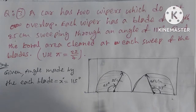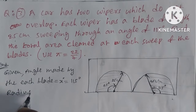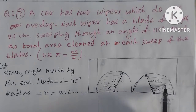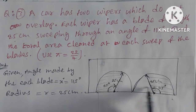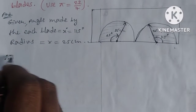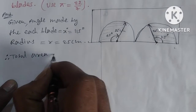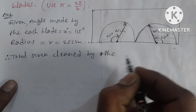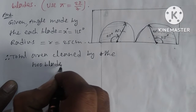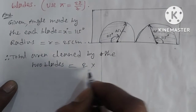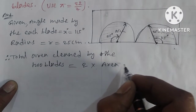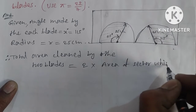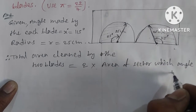The radius and the length of the blade: radius r is equal to 25 centimeters. Total area swept by the two blades through 115 degrees. Therefore, total area cleaned by the two blades equals 2 into the area of the sector with angle 115 degrees.